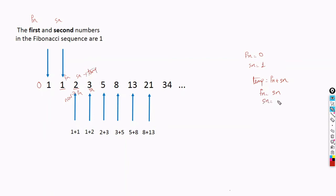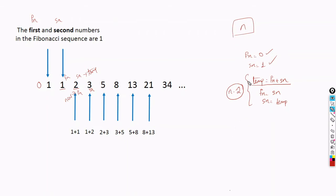This is the pseudocode. First, calculate the Fibonacci element: temp = Fn + Sn. New Fn will be Sn, and new Sn will be the temp value. This has to be repeated for how many times? Two elements are already given, so if we need total n elements, the loop has to be repeated n minus 2 times. Either you can give it that way, or initialize i as 2 and use the condition while i less than or equal to n.